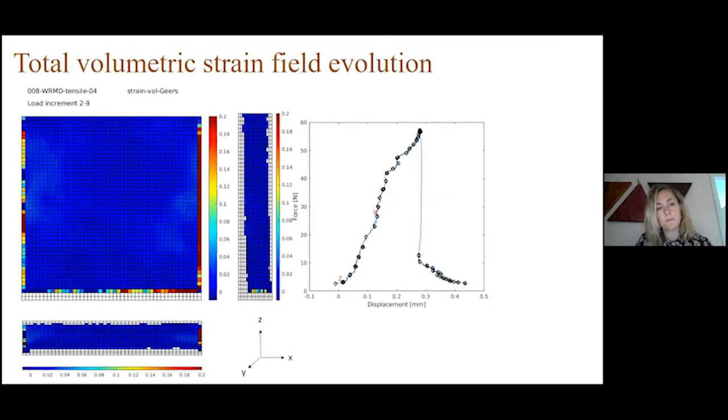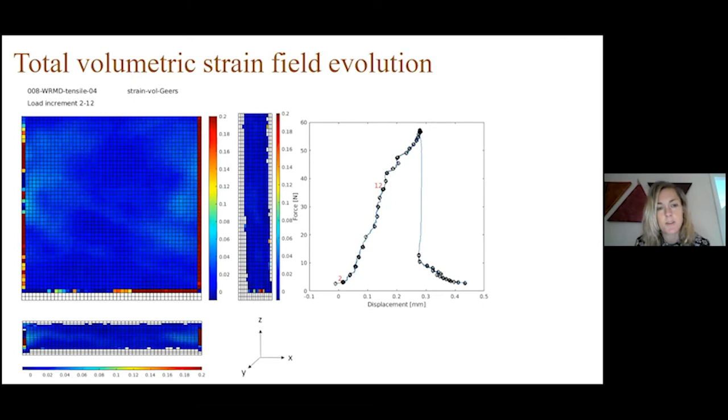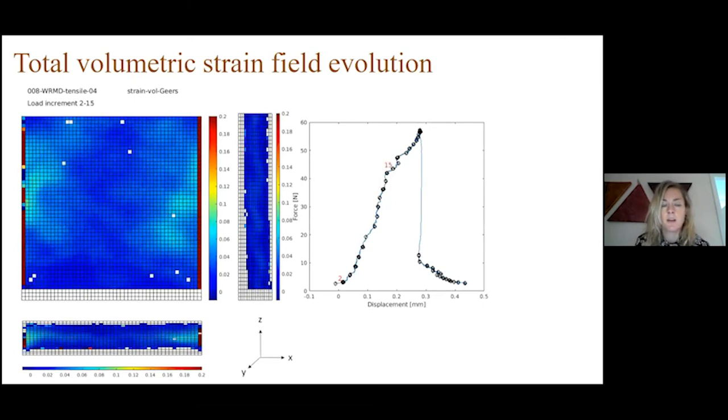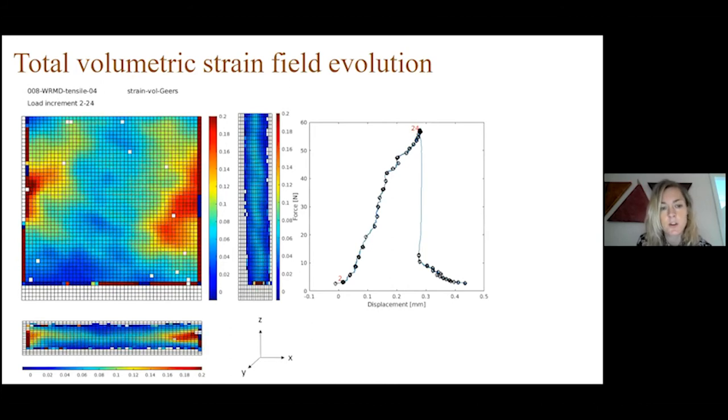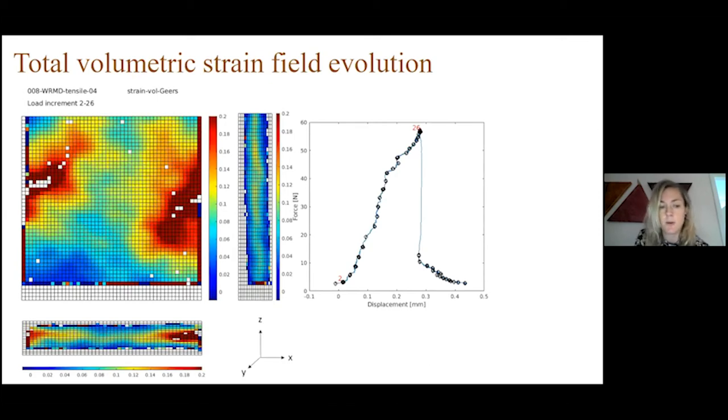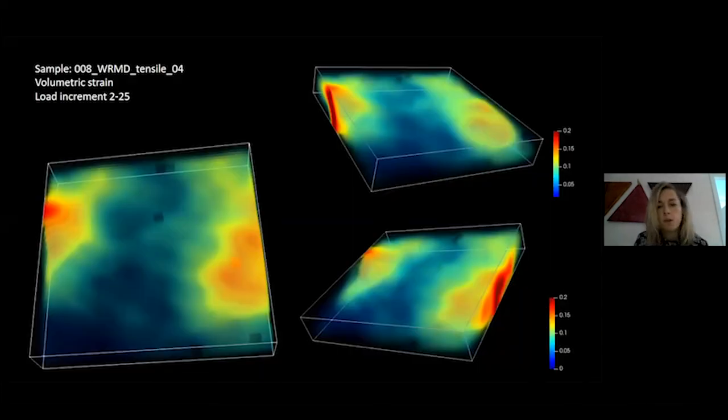Here is an animation showing how the strain fields develop during loading in a Westrock sample tested in machine direction. We can see how the strain fields build up close to the notches more and more until the sample breaks. In the bottom figure, we see the image from the out-of-plane direction and we can see that the strain fields localize in the central part of the paperboard. We can also visualize this type of data in 3D.